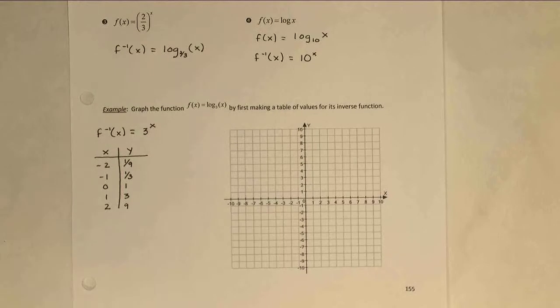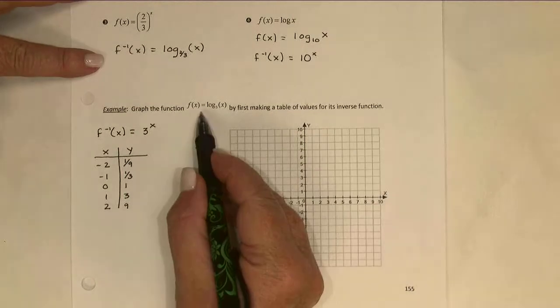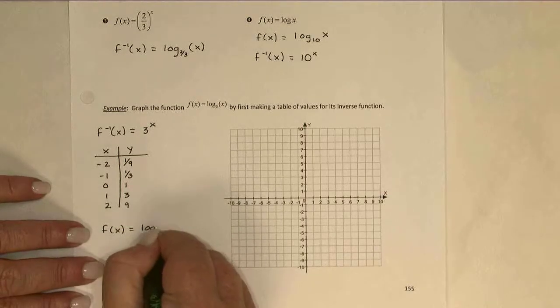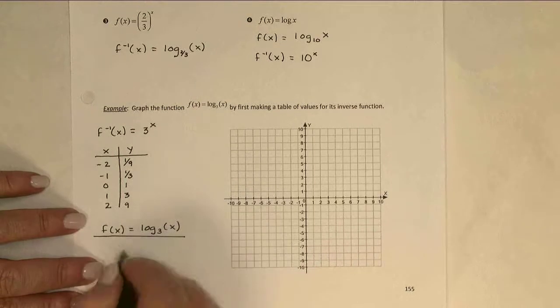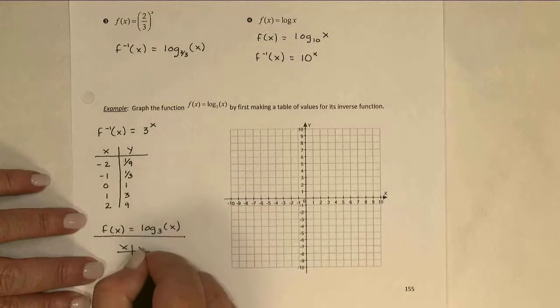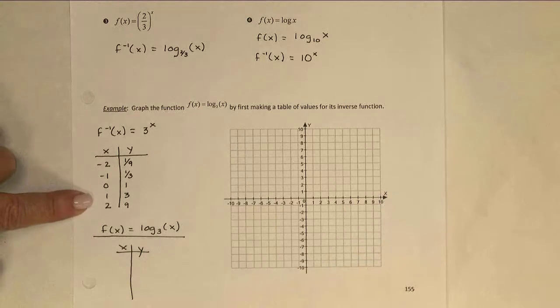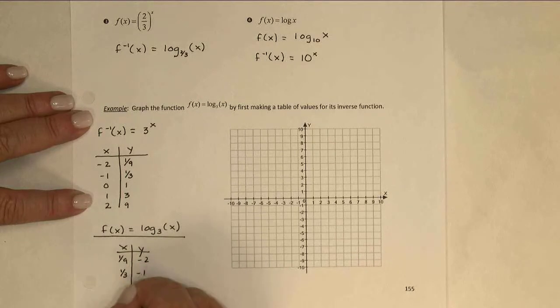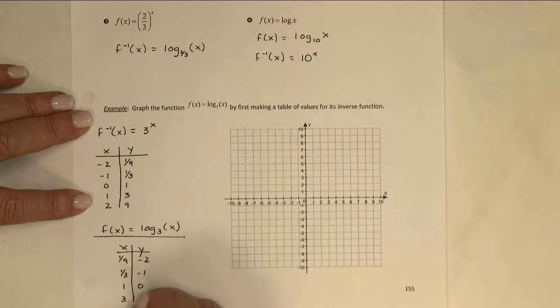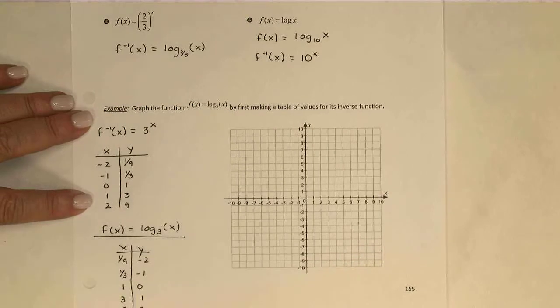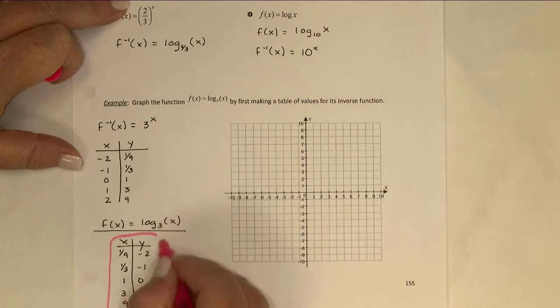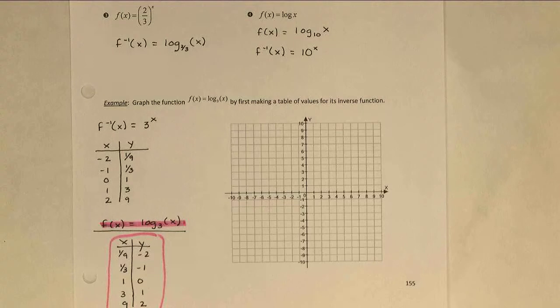I don't necessarily need to graph that, because I wasn't asked to graph the inverse. I really wanted to graph the logarithm function. But the easiest way to get this table of values for the logarithm base 3 of x is to just take this one, which wasn't very hard to generate, and swap the x's and y's. So this was helpful, but this is the one I'm actually going to graph. This is the function that I wanted.